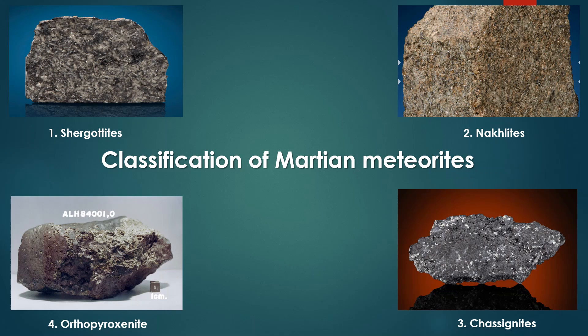Shergottites are basaltic or volcanic in age, relatively young, ranging from 150 to 600 million years. Subcategories include: basaltic shergottites, rich in pyroxene and maskelynite; olivine-phyric shergottites, which contain significant amounts of olivine; and lherzolitic shergottites, which contain a mix of olivine, pyroxene, and plagioclase.